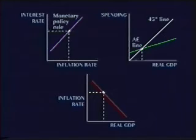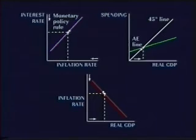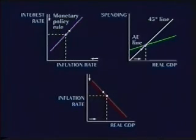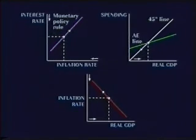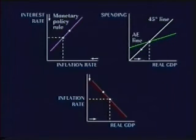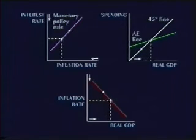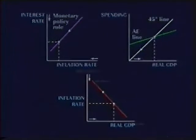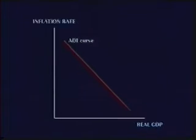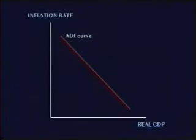Similarly, when the inflation rate falls, the eventual result is a rise in real GDP. Thus, the relationship between inflation rate and real GDP can be represented as a downward-sloping curve. This is called the ADI curve, or aggregate demand inflation curve.